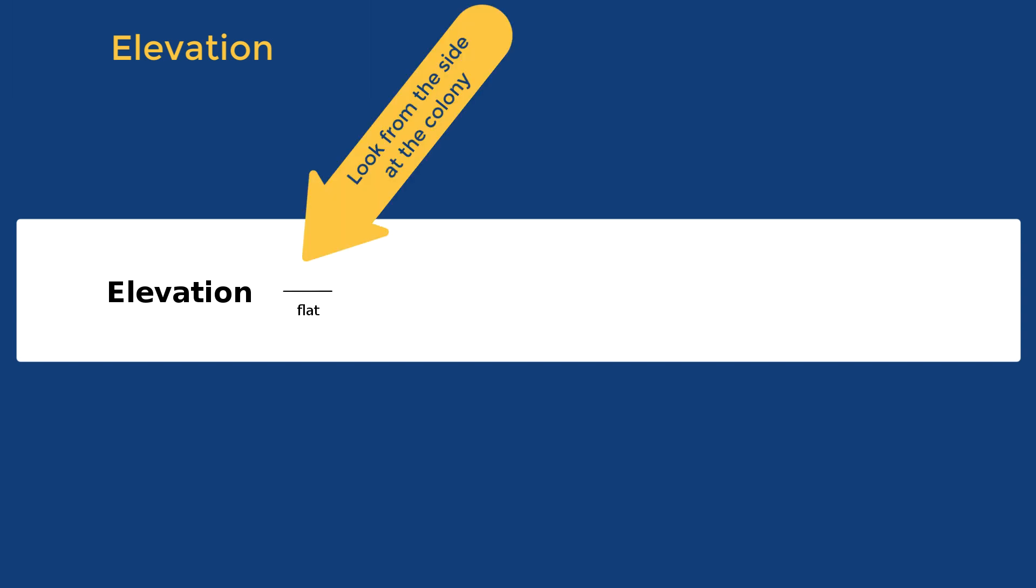Some colonies lie flat and do not stick out at all from the surface. Raised colonies stick out a bit. Convex colonies have a rounded top. And if that rounded top is very pronounced, the elevation is called pulvenate.